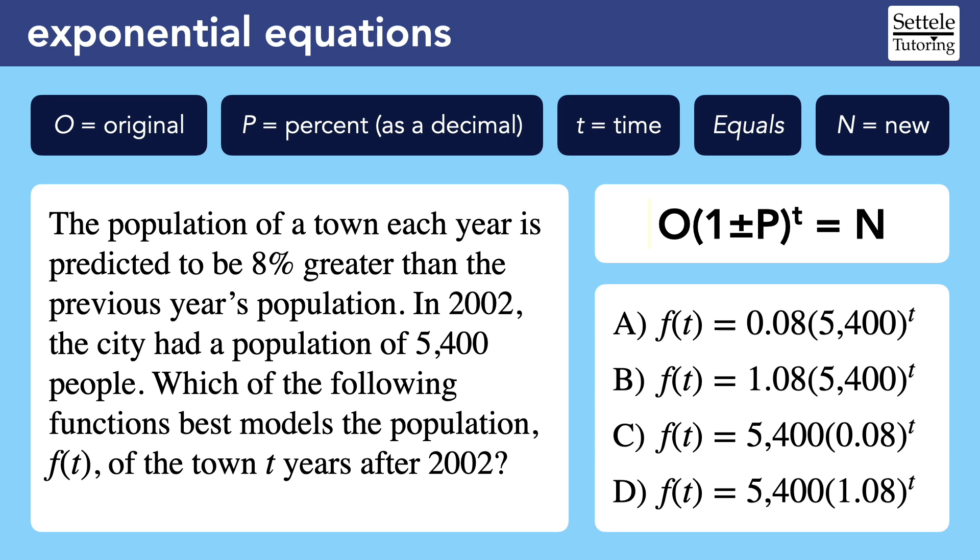Let's start at the beginning with the original value. Since the story starts in 2002, the original population is 5,400. That number should appear outside of the parentheses, where it is unaffected by the exponent t. That's true in choices C and D, but not A and B.